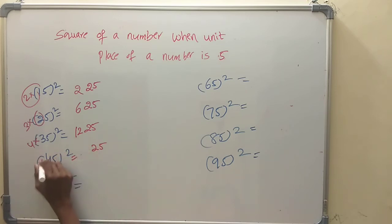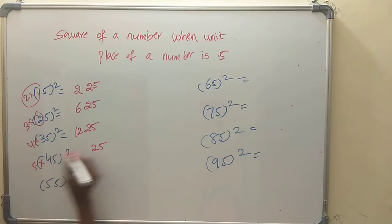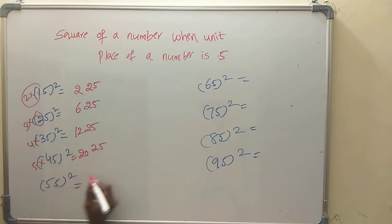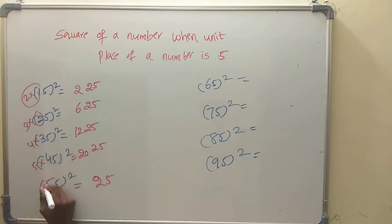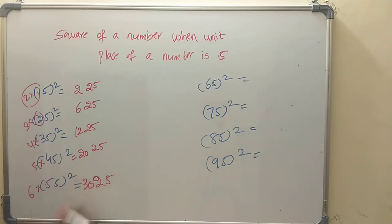For 45 squared: tens digit is 4, next number is 5, 4 into 5 is 20, append 25. Result: 2025. For 55 squared: tens digit is 5, next number is 6, 5 into 6 is 30, append 25. Result: 3025.